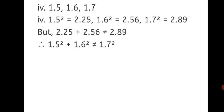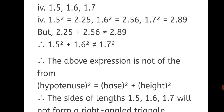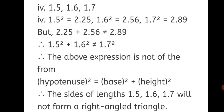Fourth sub-question: sides 1.5, 1.6, and 1.7. The squares: 1.5 square is 2.25, 1.6 square is 2.56, and 1.7 square is 2.89. Adding the squares of the smaller numbers: 2.25 plus 2.56 is not equal to 2.89. Therefore, 1.5 square plus 1.6 square is not equal to 1.7 square. The above expression is not of the form hypotenuse square equals base square plus height square. Therefore, the sides 1.5, 1.6, and 1.7 will not form a right-angled triangle.